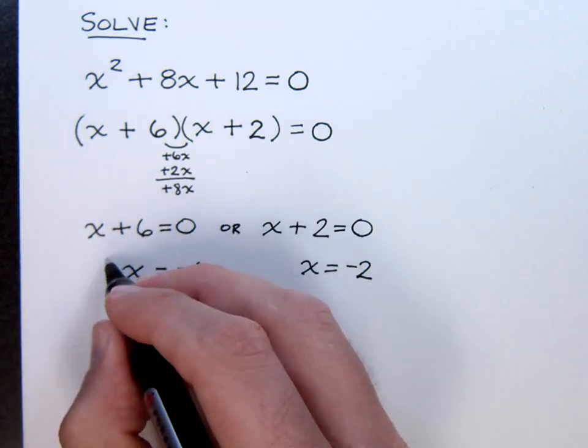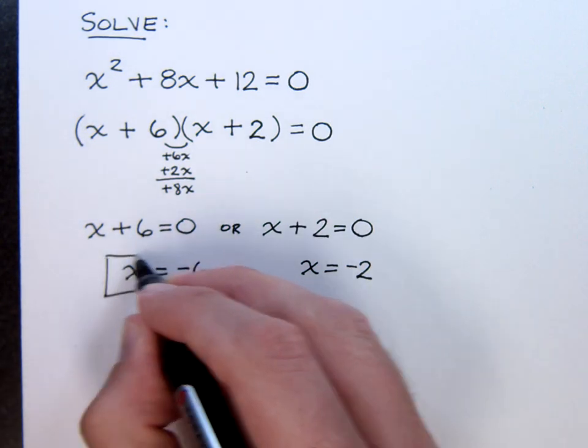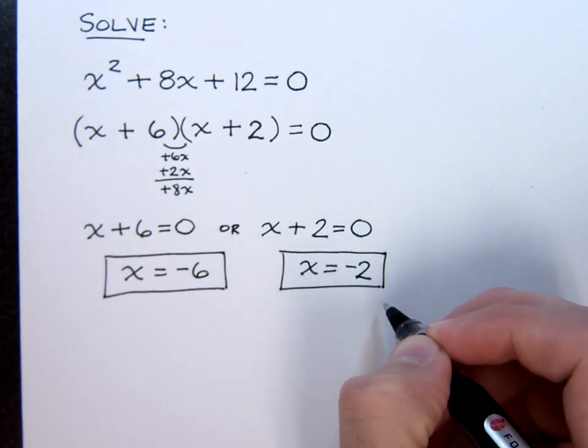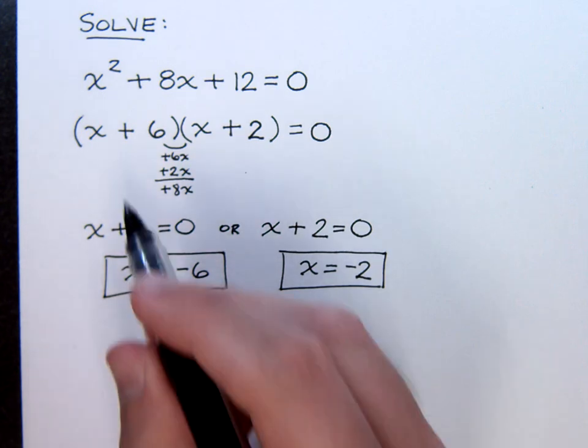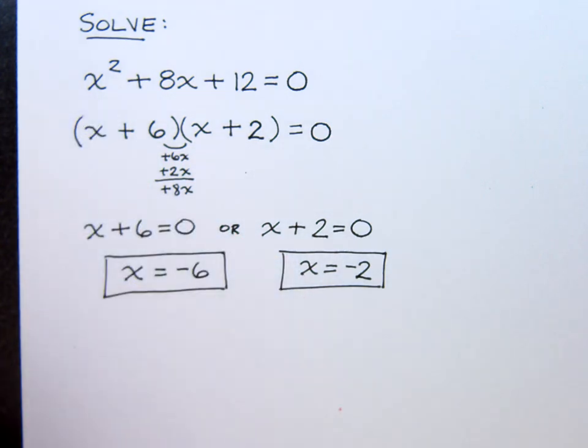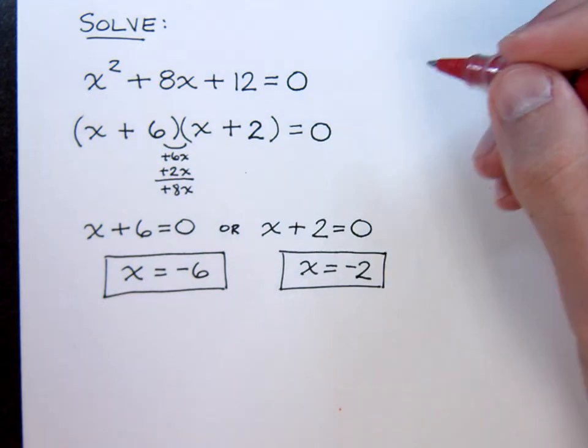So in this problem we have two different solutions. x equals negative 6 or x equals negative 2. And it's very easy to plug these guys back into the original to check to make sure that it comes out okay. In fact, let's do that just to make sure that we're all believers here.